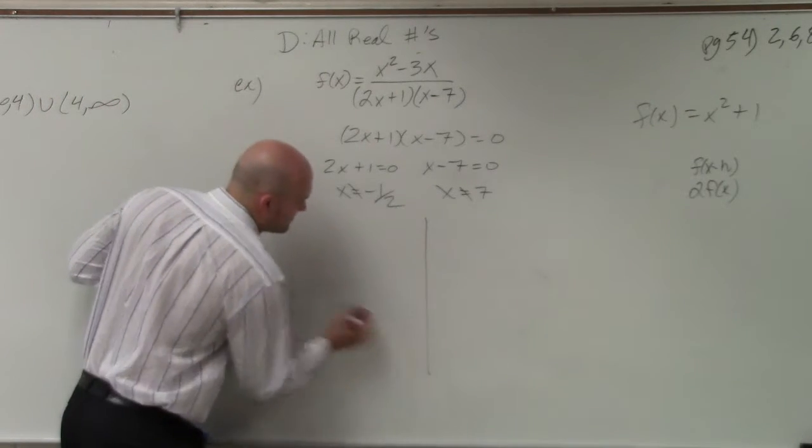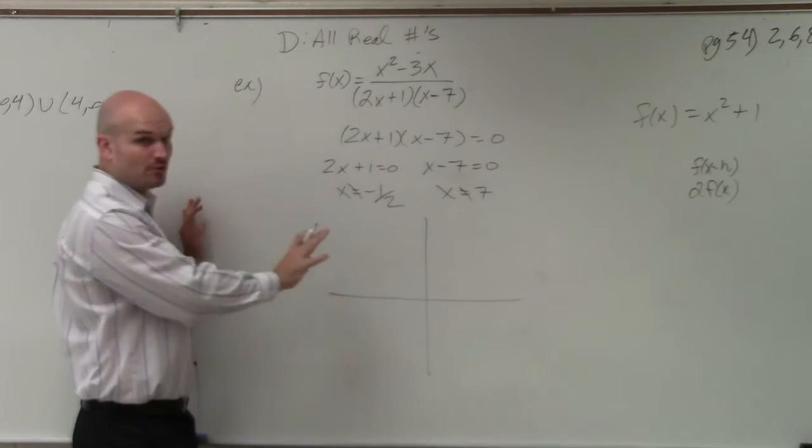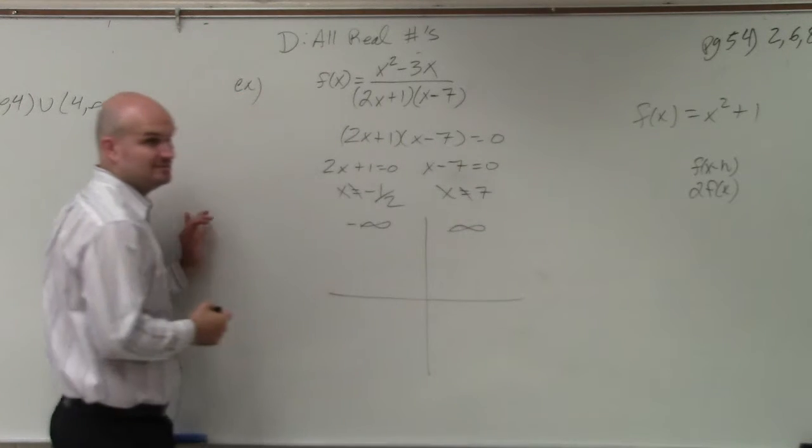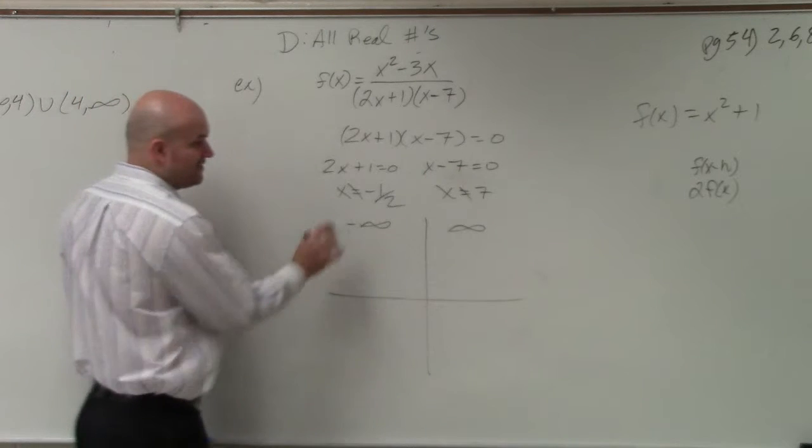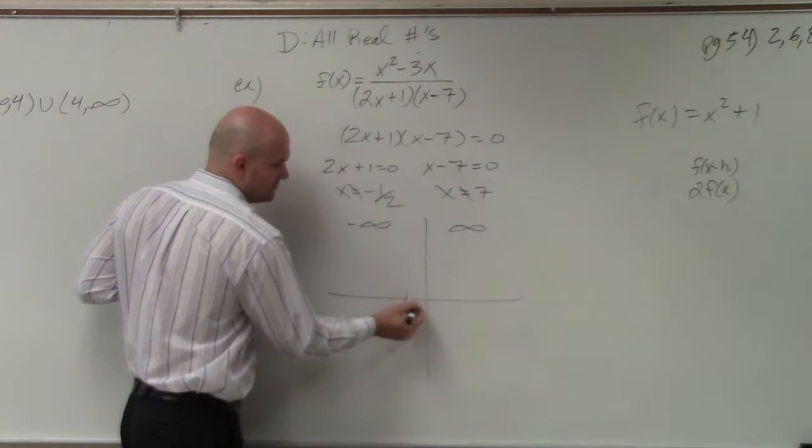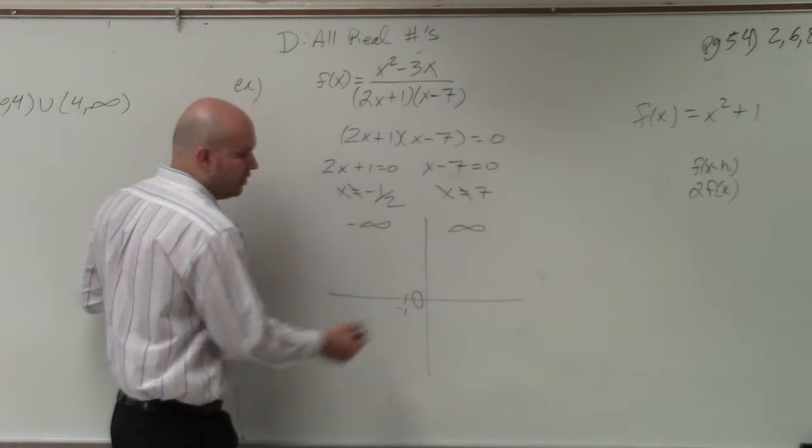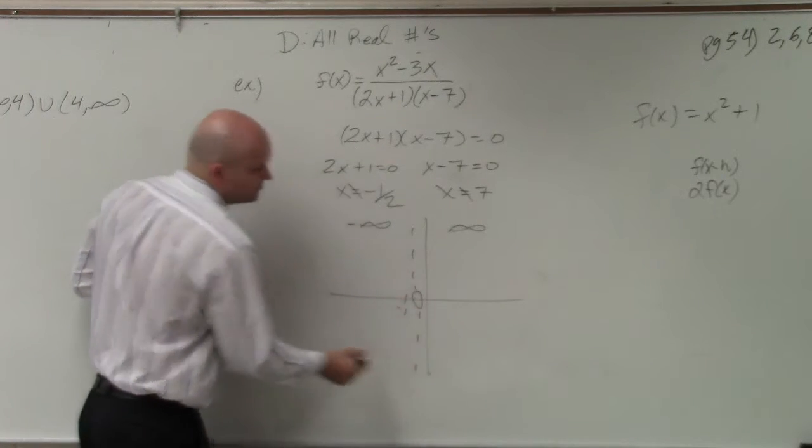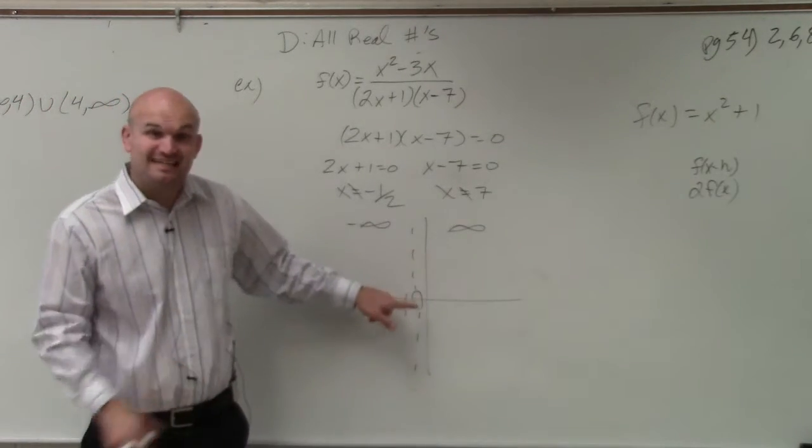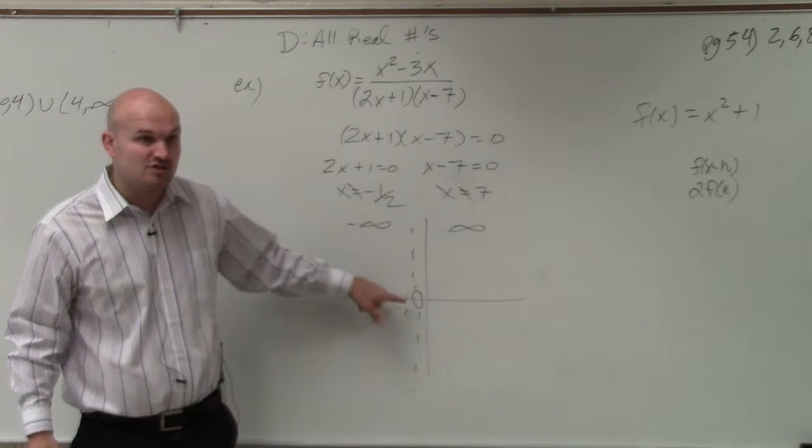So again, remember, the implied domain has no restrictions. So we're going from negative infinity to infinity, right? But we have an issue. At negative 1 half, there's a hole or an asymptote. We don't know what it is right now, because we're going to learn about that later. But the graph is not continuous at this point. That's not in our domain.